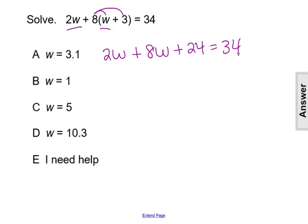Now that the parentheses are gone, we can combine our like terms and simplify 2w plus 8w to be 10w, then plus 24 equals 34.